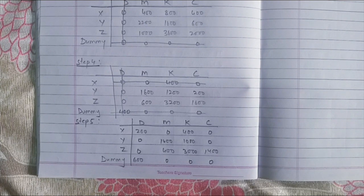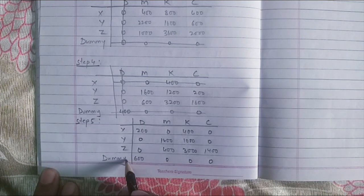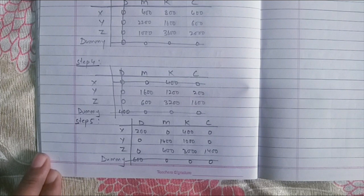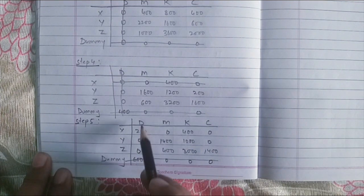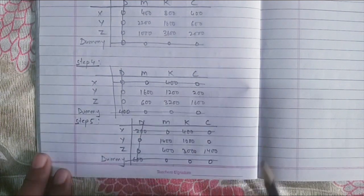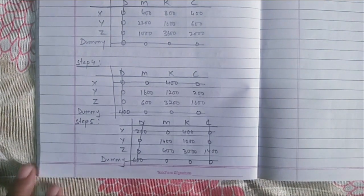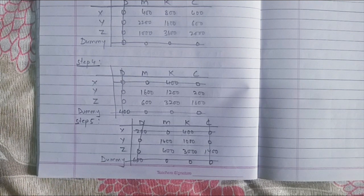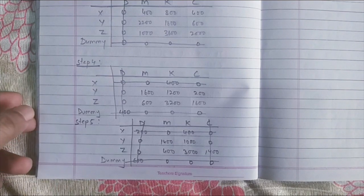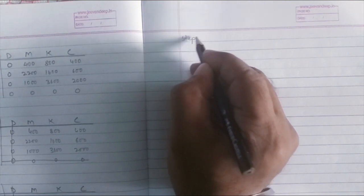Step six: cover all the zeros again. We have three zeros — using a single line to cover them. Then two here, two here and two here. Only one uncovered zero remains and either a horizontal or vertical line covers it. We have now achieved the optimum solution because the number of lines used to cover the zeros equals n, which is 4. Step six will be to do the assignment.